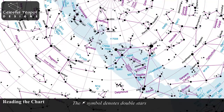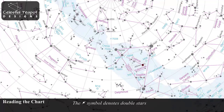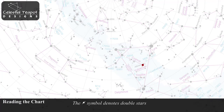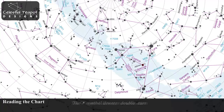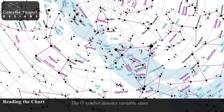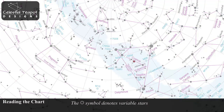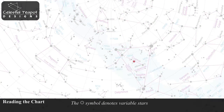Double stars are shown on the chart with a line splitting them in two. A larger circle surrounds variable stars, showing that they sometimes increase in brightness.